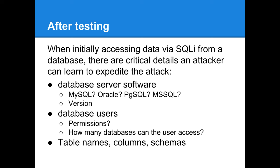After initially discovering a SQL injection vector, discover three things: what the database server software is (MySQL, Oracle, PostgreSQL, Microsoft SQL, etc.), what version of the software it is, and what the database users are — their permissions, how many databases each user can access. Finally, map out the table names, each table's columns, and schemas.